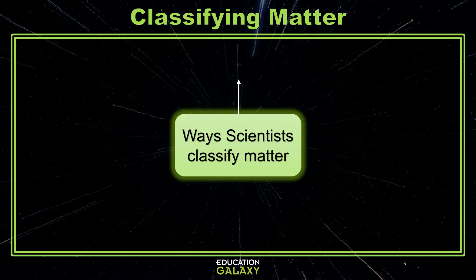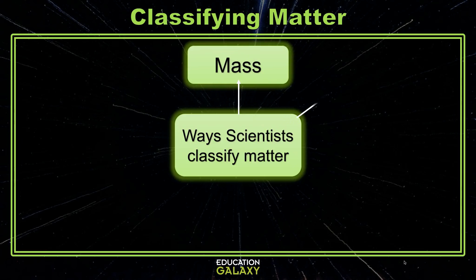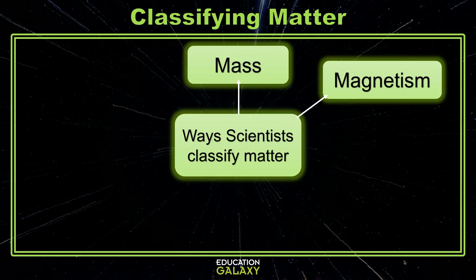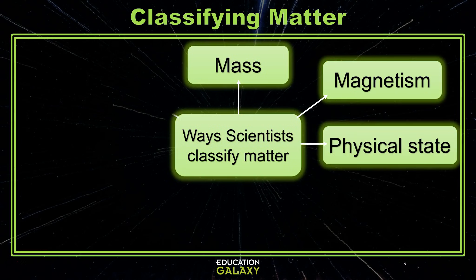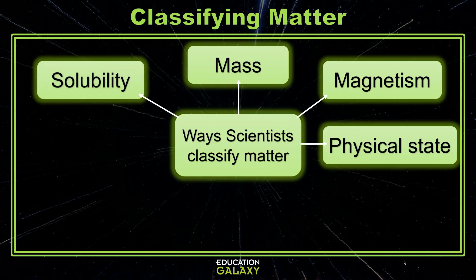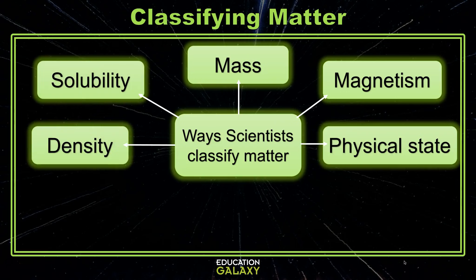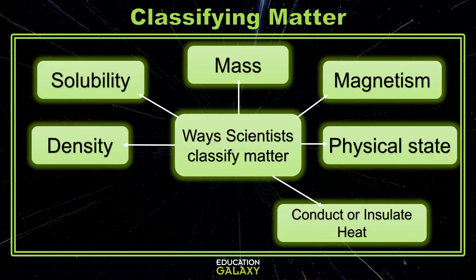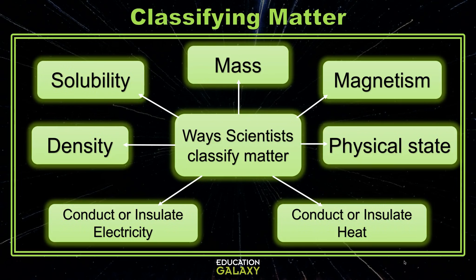These include mass, magnetism, physical state, solubility, density, and the ability to either conduct or insulate heat and electricity. Let's look at each of these.